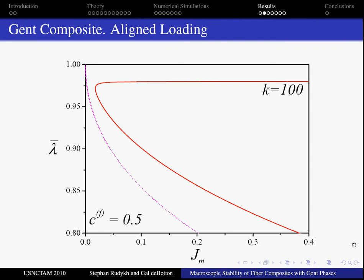We present an example for a composite with fiber volume fraction CF 0.5. The dotted magenta curve represents the lockup curve. The red continuous curve is the failure surface of the composite with shear moduli ratio of the phases k equal 100.